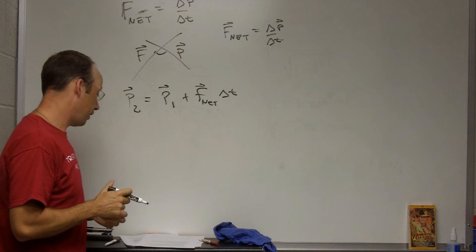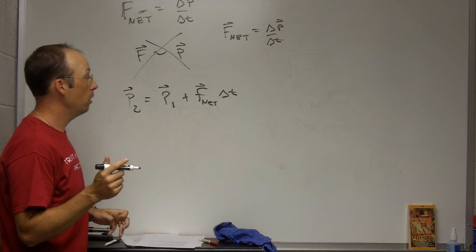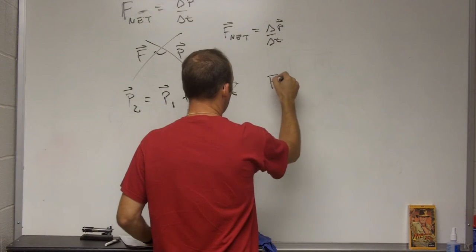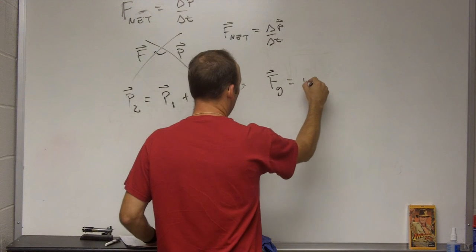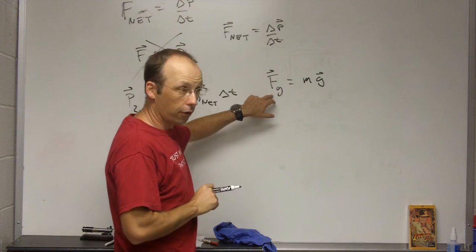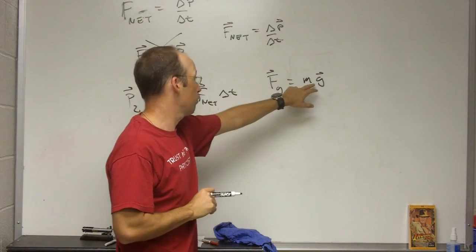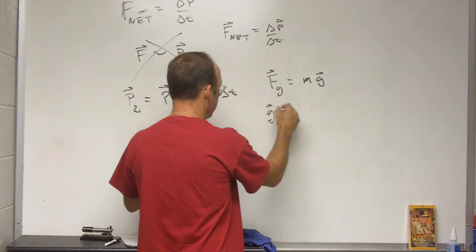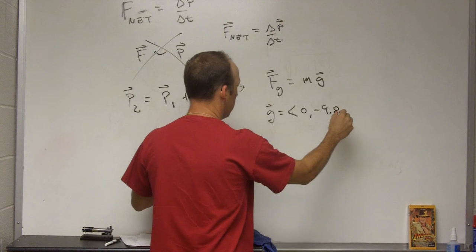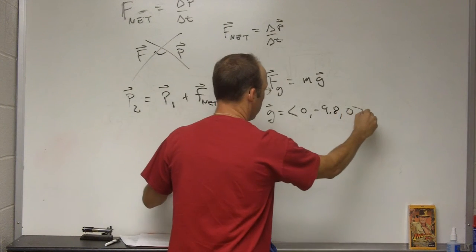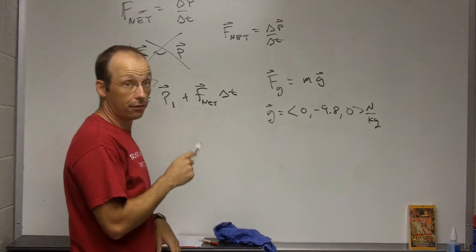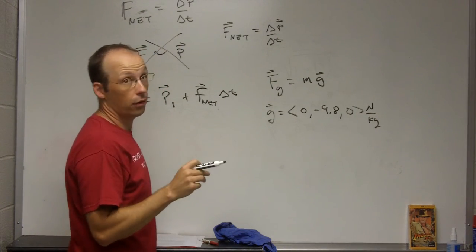Just a couple other things that we looked at in chapter 2. The gravitational force. We have F, I'll call it G, is Mg. This is near the surface of the earth, the earth pulls on things, the force is proportional to G. G is called the gravitational field, and it has a value of 0, negative 9.8, 0 newtons per kilogram. Now, that's not true if you get far away from the earth or if you're on a different planet.